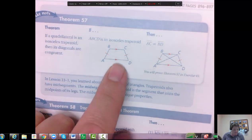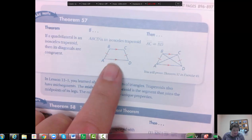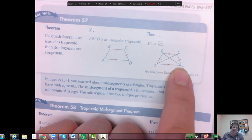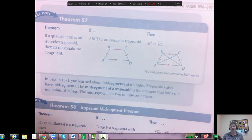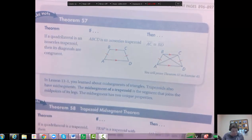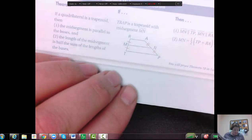One more thing is if you have isosceles, then we know that those diagonals are also congruent. The whole entire diagonal is congruent to the other one, kind of like a rectangle. Those are congruent as well.